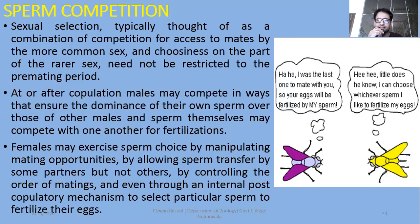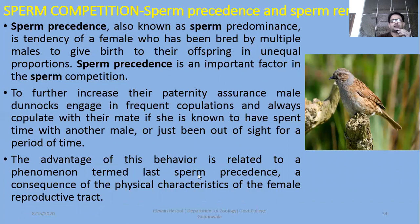Females may exercise sperm choice by manipulating certain strategies — by allowing sperm transfer from some partners but not others, through post-mating strategies, by controlling the order of matings, and even through internal post-copulatory mechanisms that determine which sperm will fuse. There are two concepts: sperm precedence and sperm removal. Sperm precedence, also known as sperm predominance, is a tendency of a female who has been bred by multiple males to give birth to offspring in unequal proportions. Sperm precedence is an important factor in sperm competition.